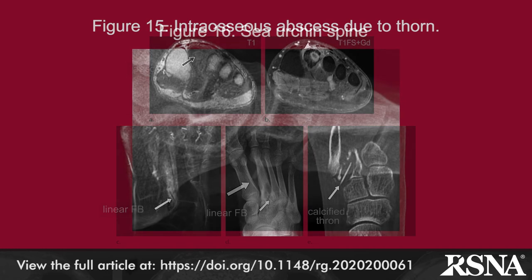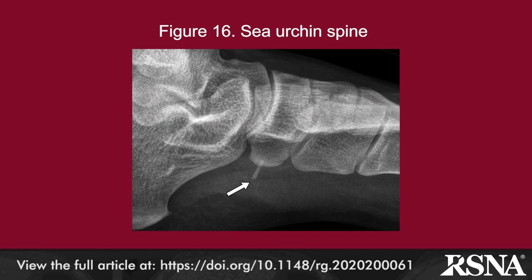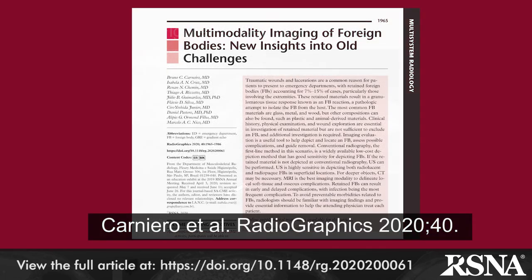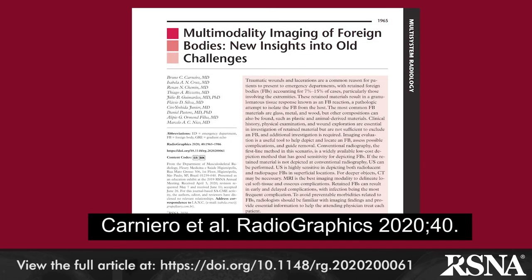Animal-derived materials associated with soft tissue injuries and potentially foreign bodies include fish bones, bone fragments, teeth, and spines. Sea urchin spines are one of the most frequent foreign bodies in the extremities, and fortunately are most often radiopaque due to their calcium content.